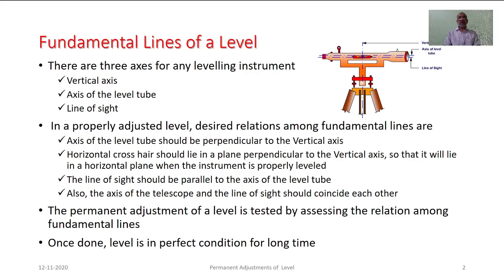When dealing with the construction aspect of DEMP 11, there are three basic axes which can be treated as fundamental lines for any leveling equipment: the vertical axis of the equipment, about which the equipment rotates in the horizontal plane; the axis of the level tube, which is the axis tangential to the position of the bubble at the center of its run; and the line of sight, which is essentially the line joining the intersection of the vertical hair and horizontal hair of the diaphragm at the optical center of the objective glass.